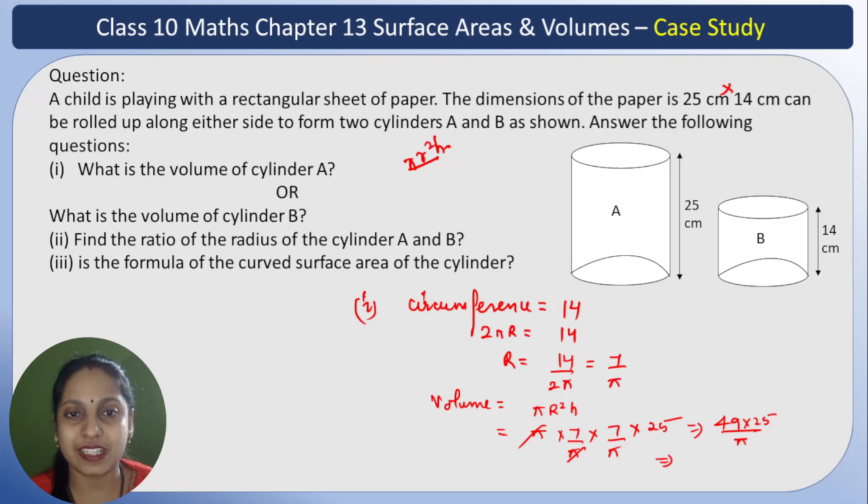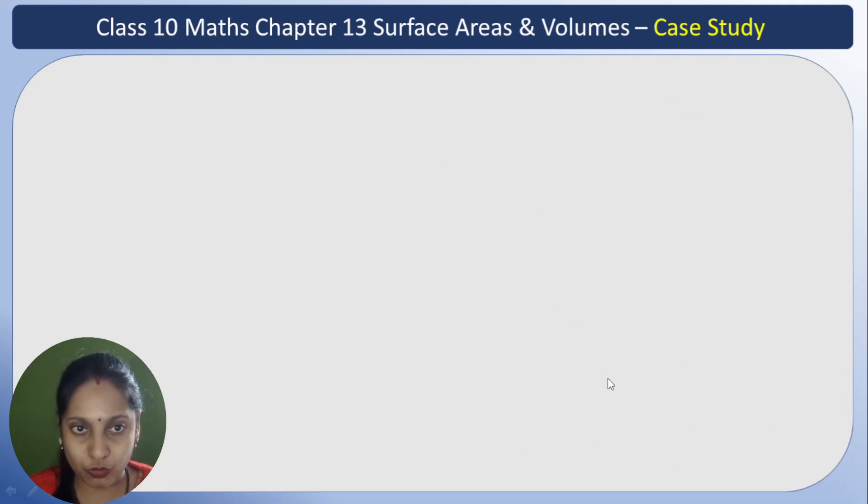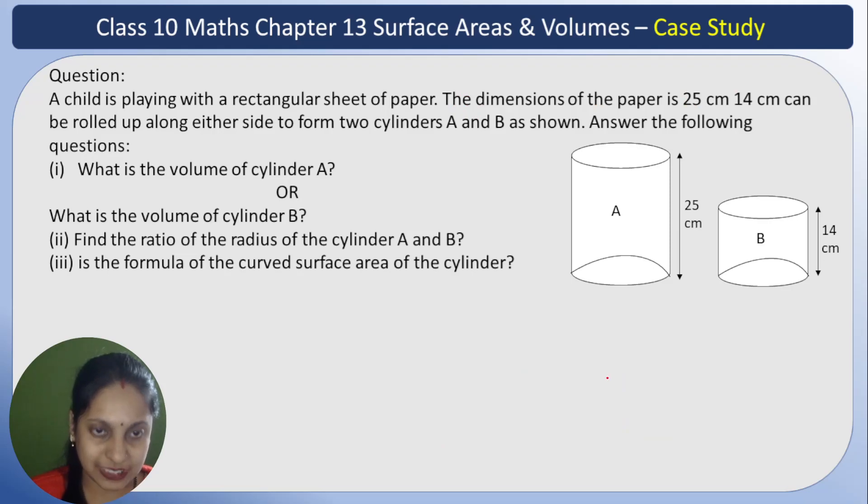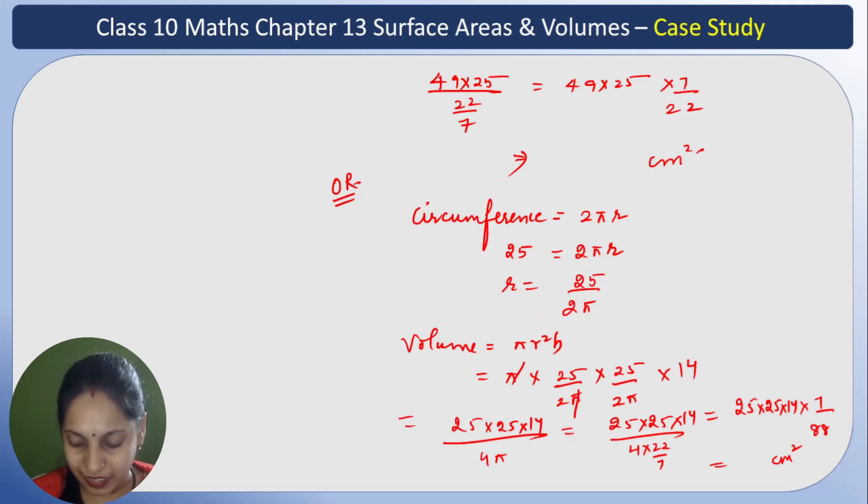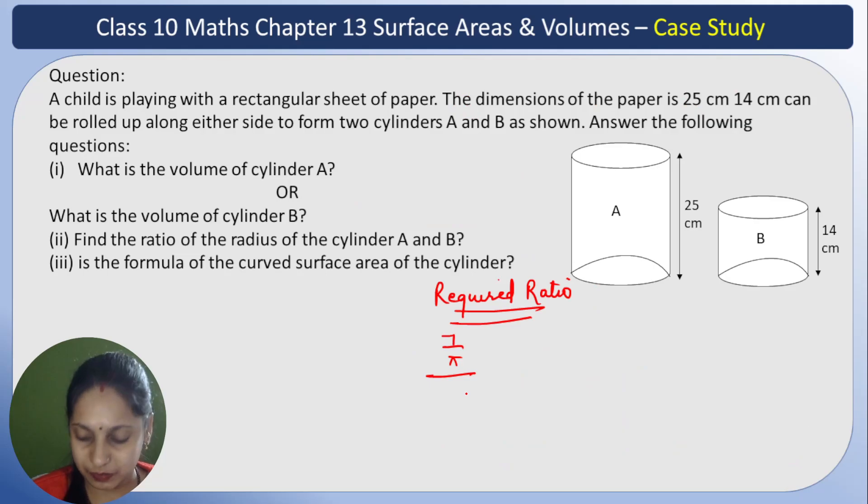Find the ratio of radius A and B. Radius of A is 7 upon π, and B is 25 upon 2π. Required ratio: we already found the radii. So it's 7 upon π divided by 25 upon 2π. This becomes 7 upon π times 2π upon 25. π cuts, so 14 upon 25. The ratio is 14:25. This is your second part, clear.